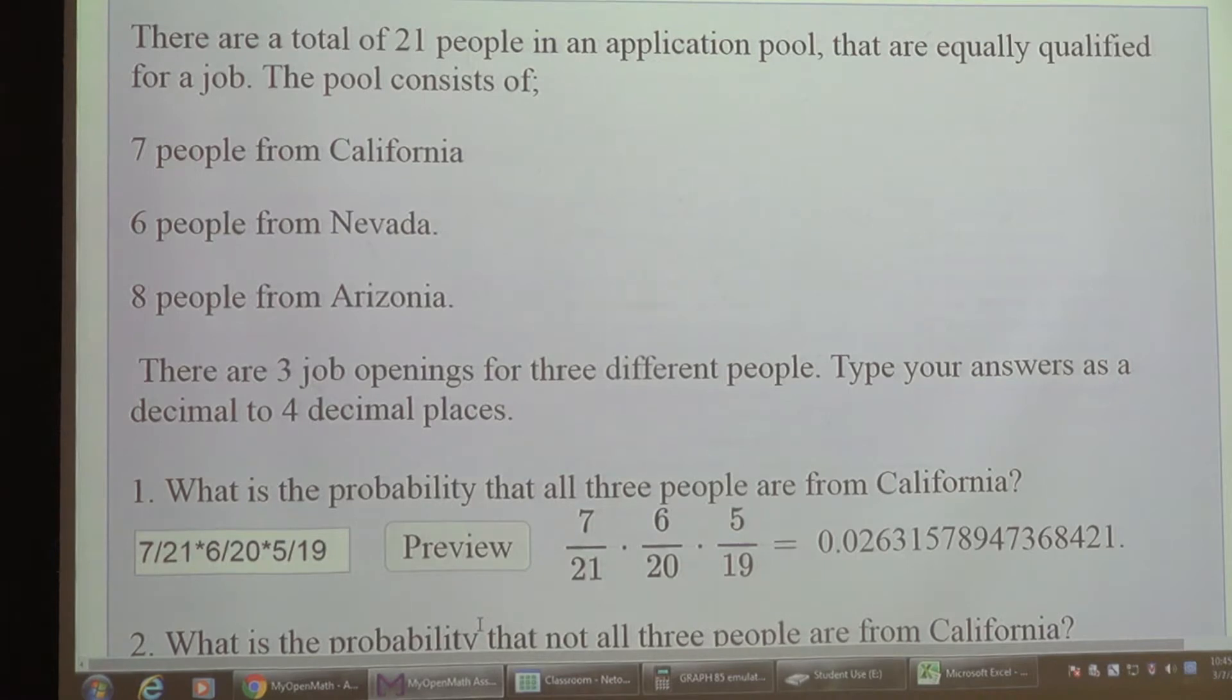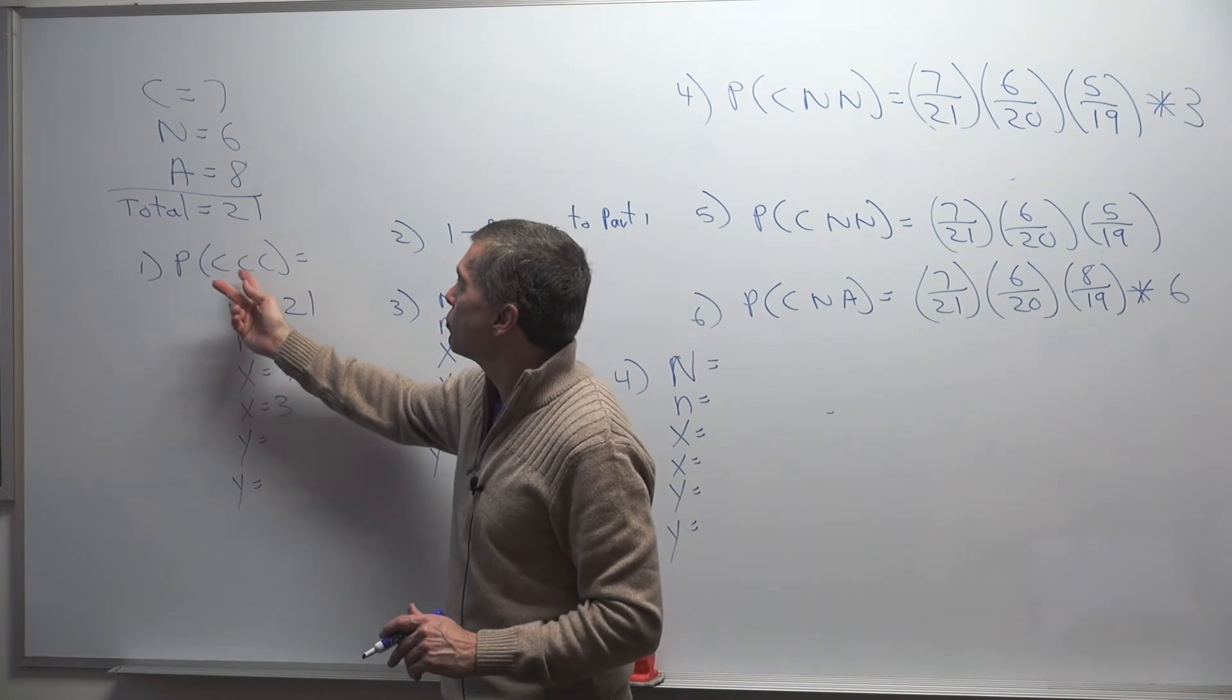Problem one asks, what is the probability that all three people are from California? So I could write it this way: probability of California, California, California.